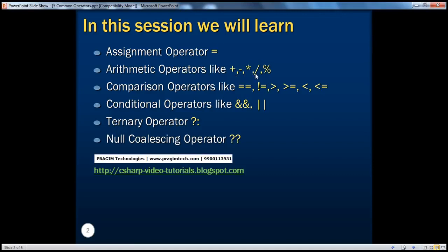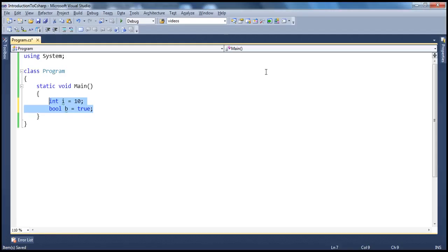There are two important operators when you divide two numbers, because division gives you two results: the quotient and the remainder. If I divide 10 by 2, I get the quotient as 5 and the remainder as zero. Depending on which operator you use — forward slash gives you the quotient, while the percentage sign gives you the remainder. Let's do a quick demo on that.